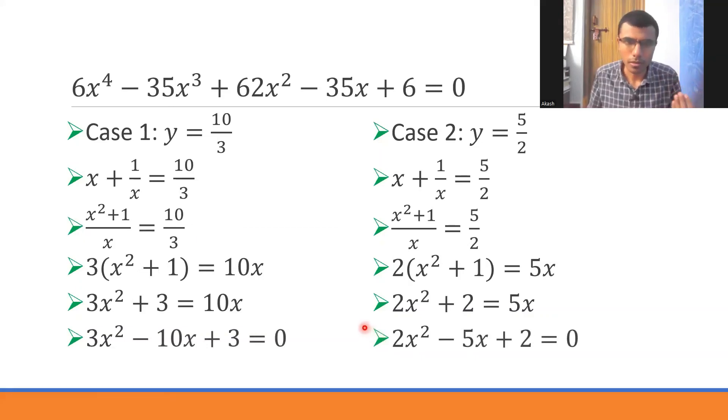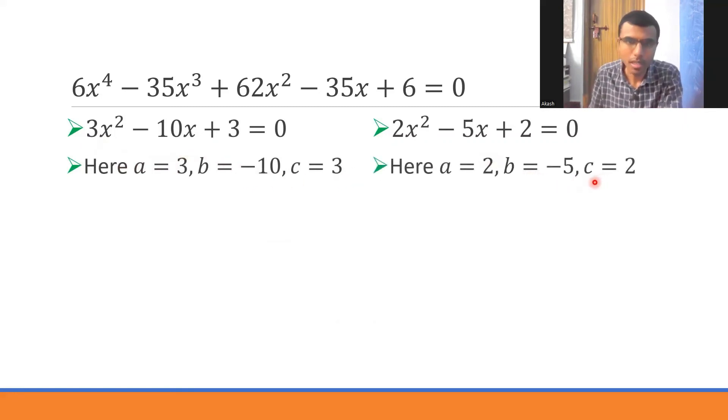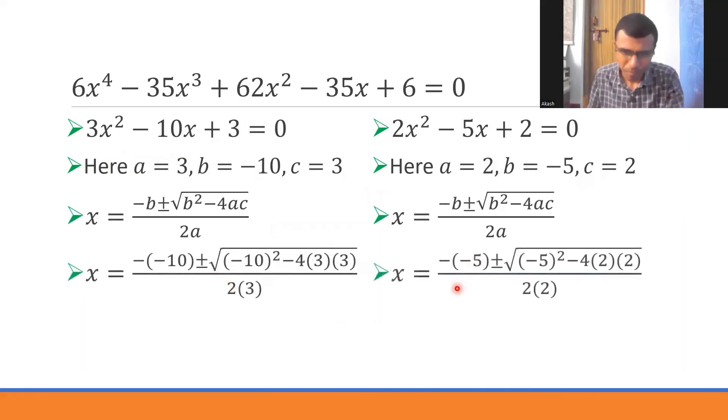To solve this, I would suggest the formula method because sometimes roots can be irrational or imaginary. Better to go for formula method. If it looks like it can be solved by factorization, you can go with it. Here a is 3, b is -10, c is 3. Here a is 2, b is -5, c is 2.